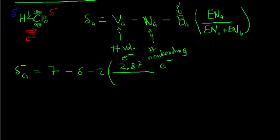We're going to divide by the total electronegativity, so 2.87 for Chlorine, plus 2.30 for Hydrogen. Now we do the math on all of this, and we find out that it's negative 0.11.